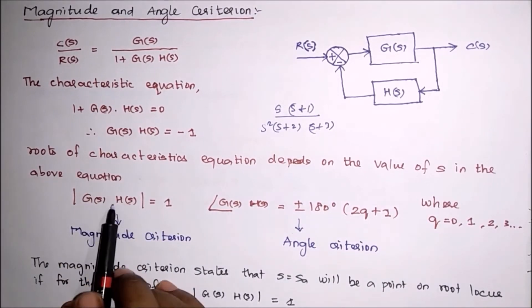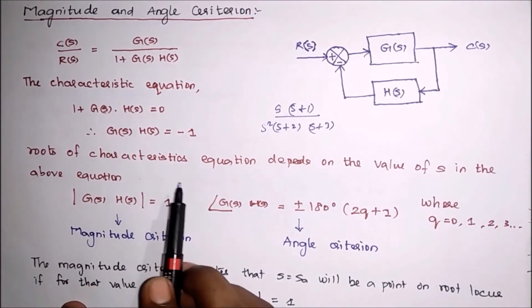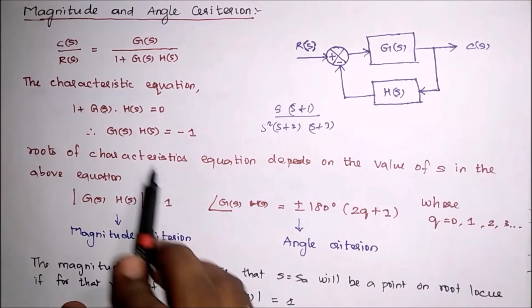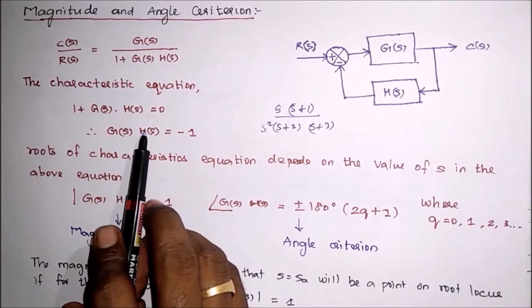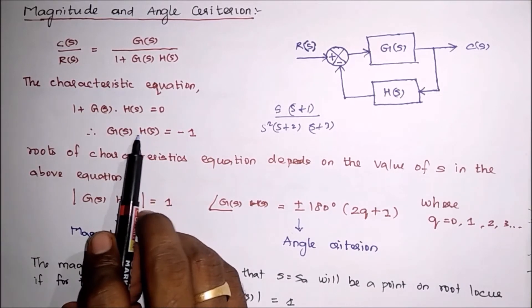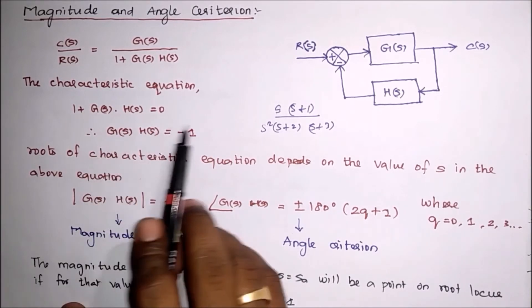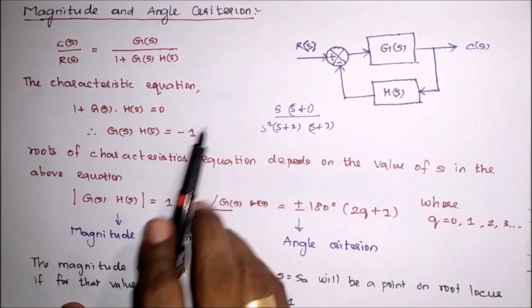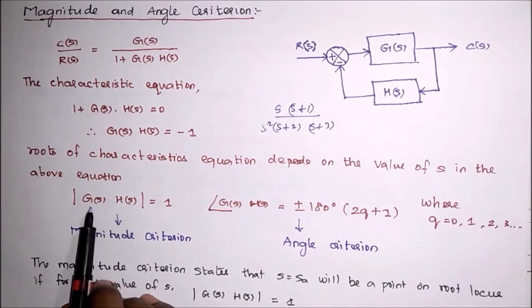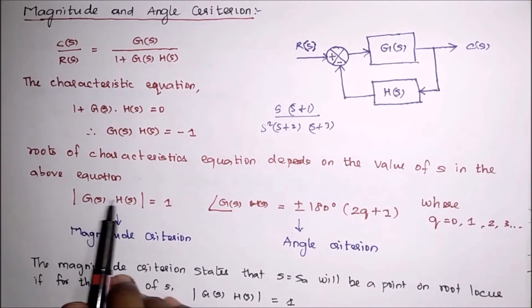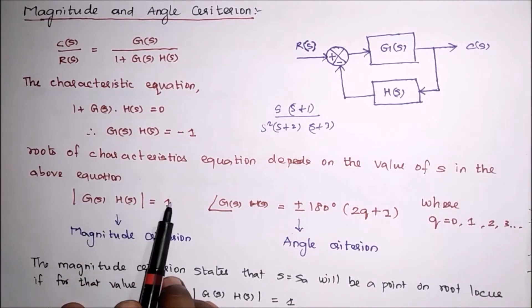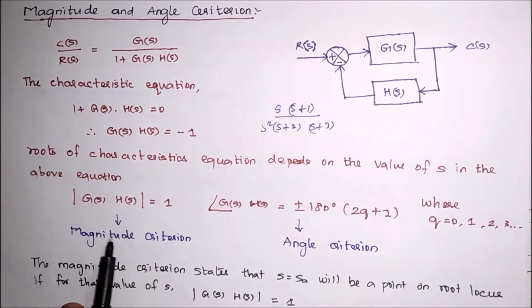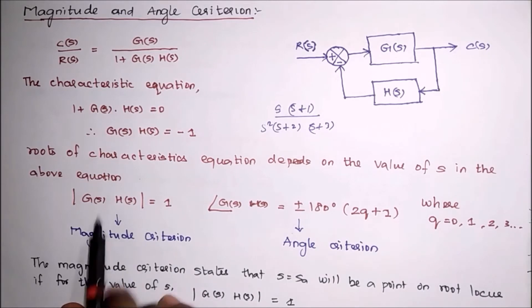To get the magnitude from this characteristic equation, we have to find the modulus on both sides. We get: magnitude of G(S) into H(S) equals 1. This is called the magnitude criterion.